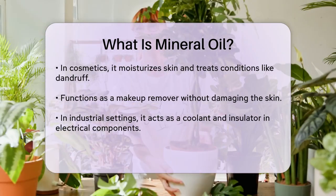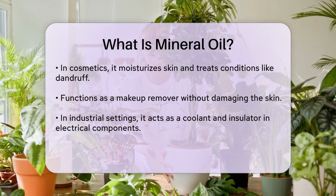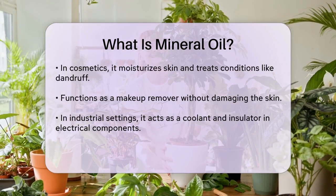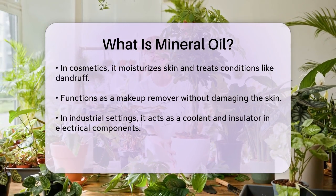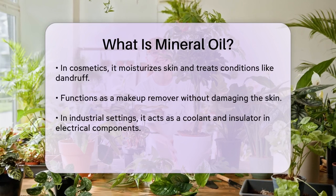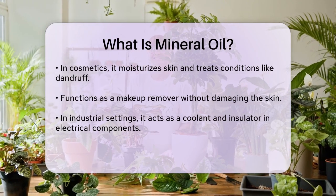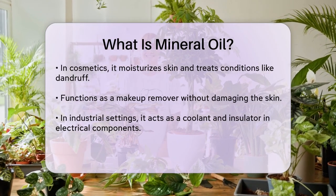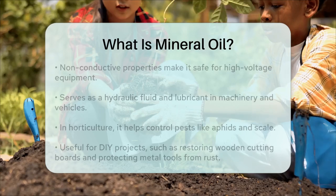Mineral oil is also used in industrial settings as a coolant and insulator in electrical components like transformers and switchgear. It's non-conductive and helps to disperse switching arcs, making it safe for use in high-voltage equipment.